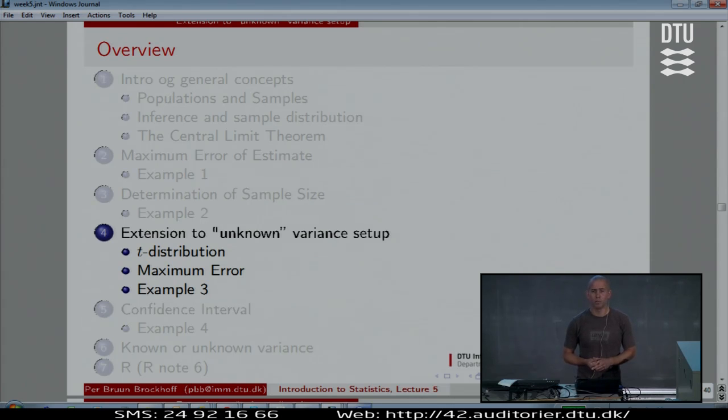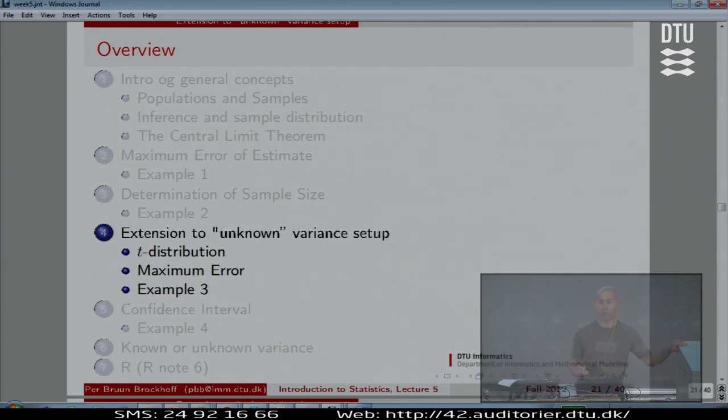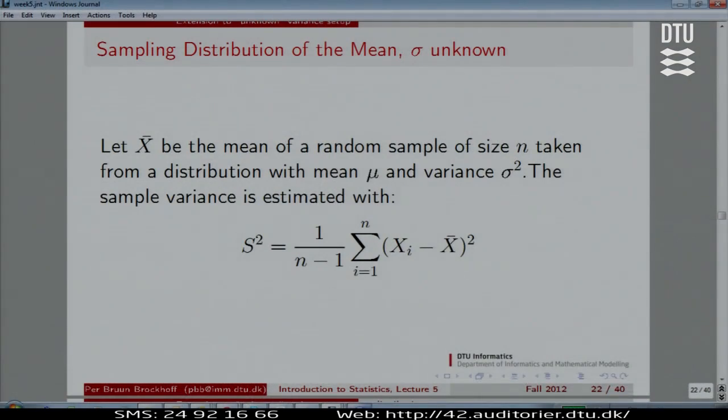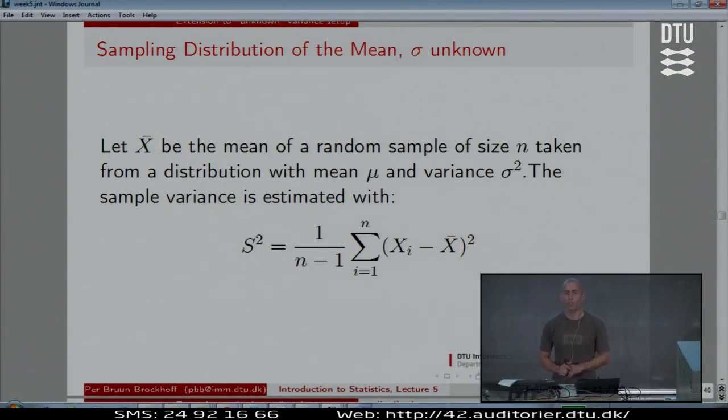Now we are going to loosen one of the assumptions about the variance to become a bit more realistic. Generally speaking, the assumption of knowing the variability, the 0.2 squared in our play example, will generally not be given to us out there. When we are in a practical situation, we may not know this variance. So we have to face the fact that we don't know it.